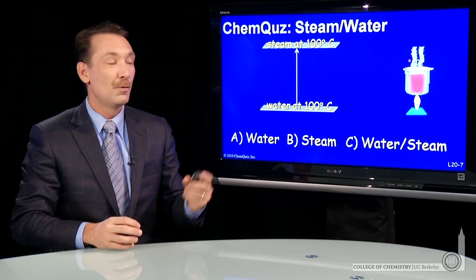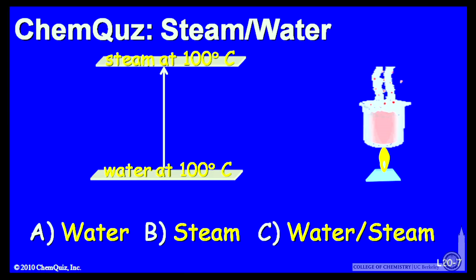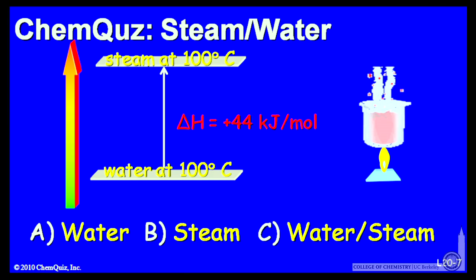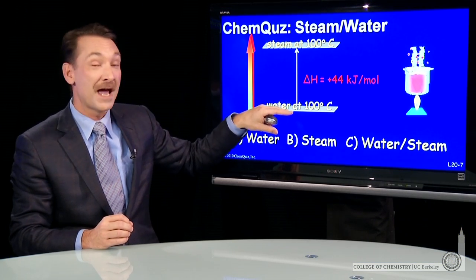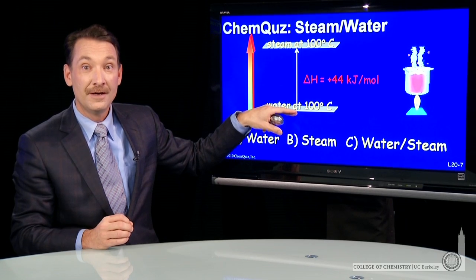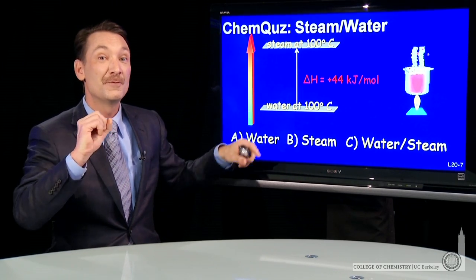Now, which is more dangerous to come in contact with? This is a 44 kilojoule increase in energy when you go from water to steam. That means as you go from steam back to water, that 44 kilojoules will be released.